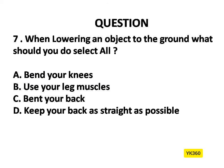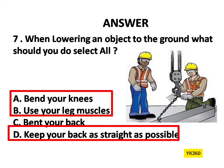Question Number 7. When lowering an object to the ground, what should you do? Select all that apply. Options are: A. Bend your knees, B. Use your leg muscles, C. Bend your back, D. Keep your back as straight as possible. Answer is A, B, and D: Bend your knees, use your leg muscles, and keep your back as straight as possible.